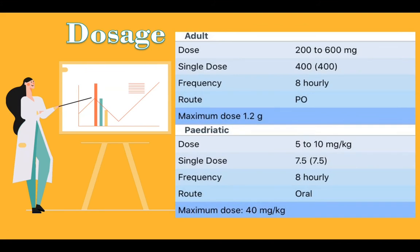Dosage. The adult dose is 200 to 600 mg. Single dose is 400 mg. Frequency is 8 hourly. The route is oral, and the maximum dose in adults is 1.2 g. Pediatric dosage: the pediatric dose is 5 to 10 mg per kg. A single dose is 7.5 mg per kg. Frequency is 8 hourly. Route is oral. The maximum pediatric dose is 40 mg per kg.